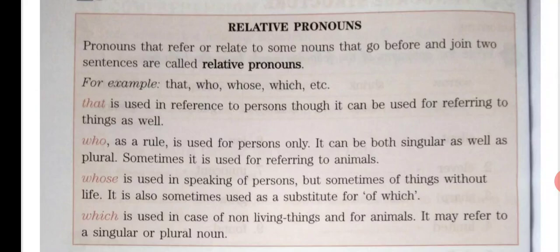We use each relative pronoun for a specific purpose. First: 'that' is used in reference to persons, though it can be used for referring to things as well. That jo hai, woh person ki reference dene ke liye use kiya jata hai, though woh things ke liye bhi use kiya ja sakta hai.